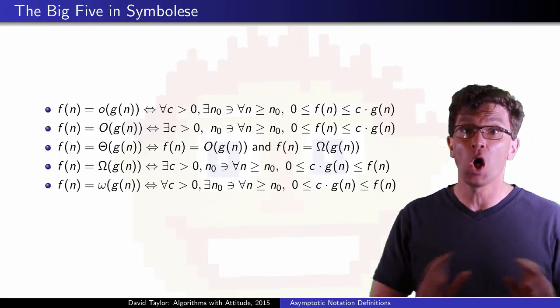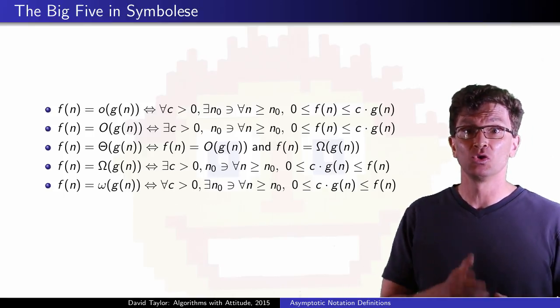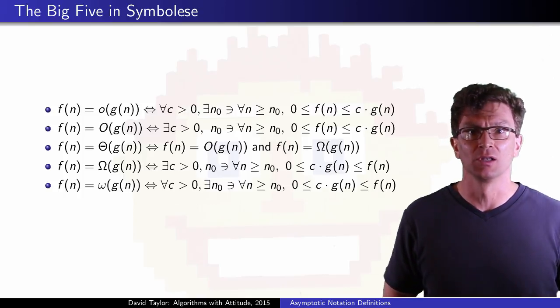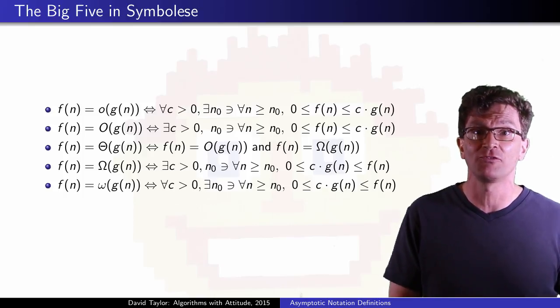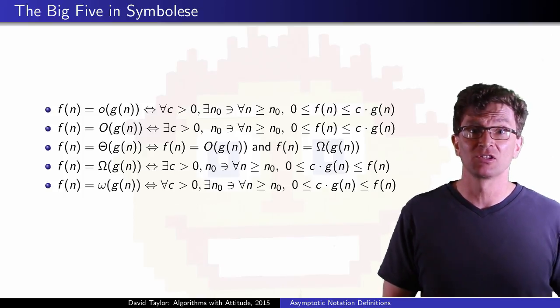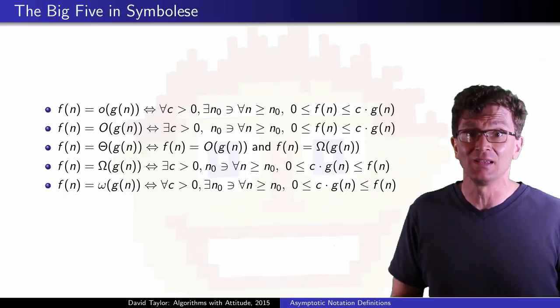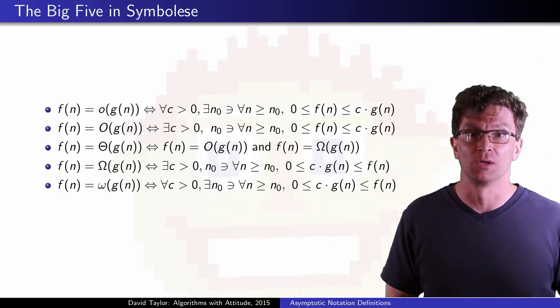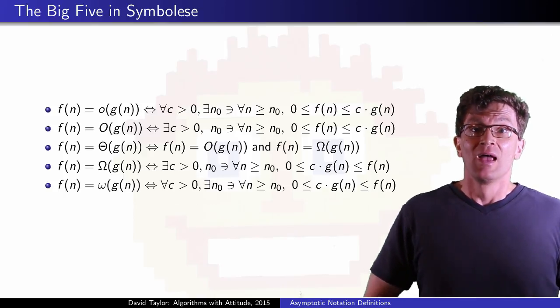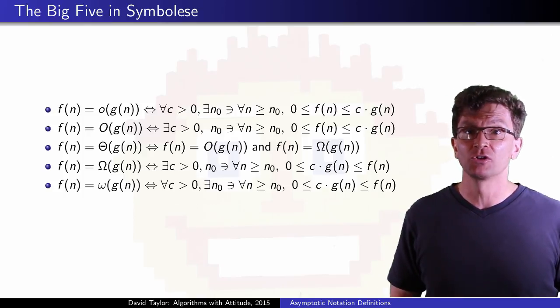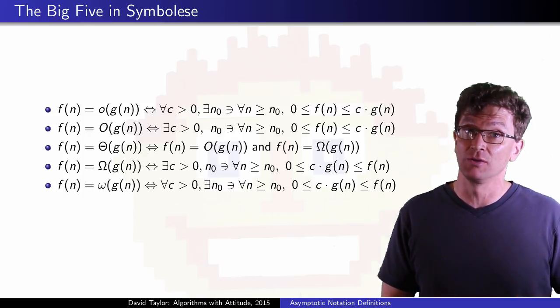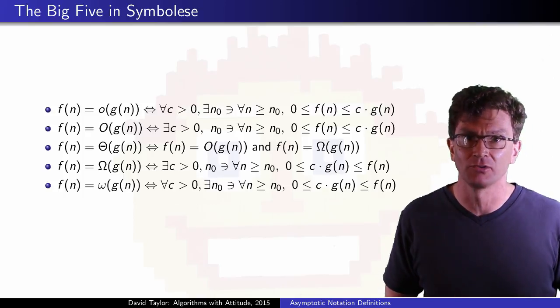In fact, you can define all of the other growths by just using the big O definition, like f(n) is in big omega of g(n), if and only if g(n) is in big O of f(n), but those definitions probably aren't as constructive as these in helping you to prove membership. Lots of books have slight differences in how these are defined, but most are defining the same sets, especially if you consider only increasing positive functions.